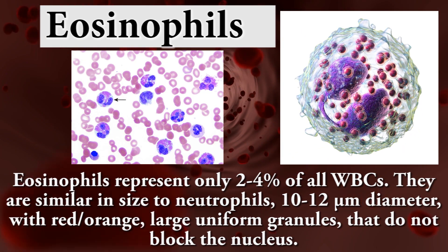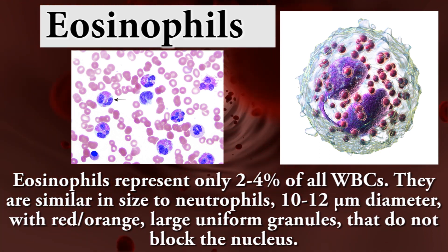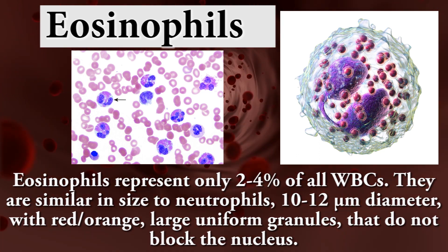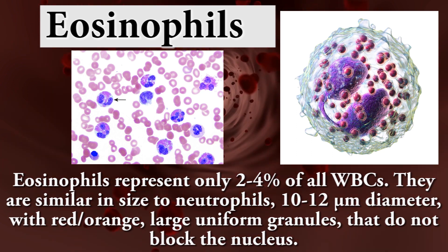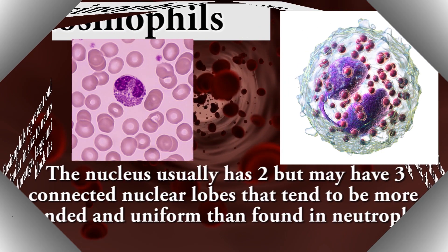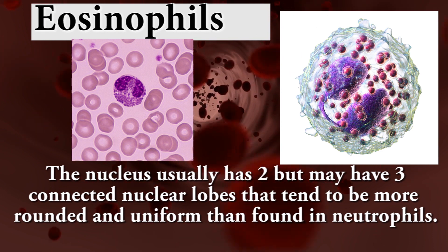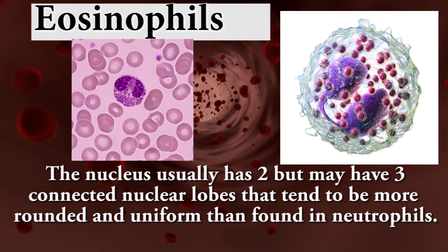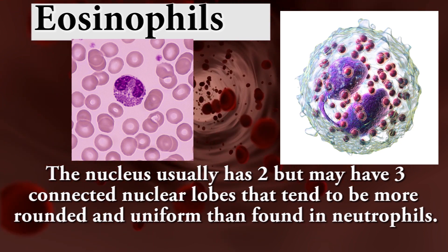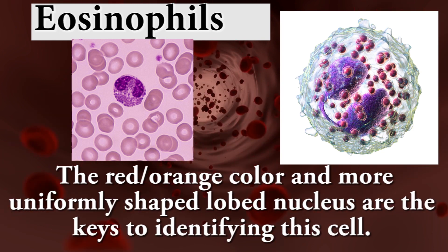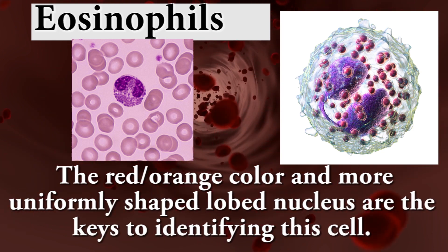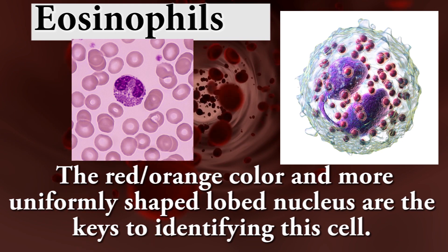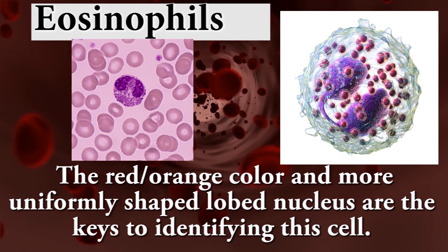Eosinophils represent only 2 to 4% of all WBCs. They are similar in size to neutrophils — 10 to 12 micrometers in diameter — with red or orange large uniform granules that do not block the nucleus. The nucleus usually has 2 but may have 3 connected nuclear lobes that tend to be more rounded and uniform than in neutrophils. The red or orange color and more uniformly shaped lobed nucleus are the key to identifying this cell.